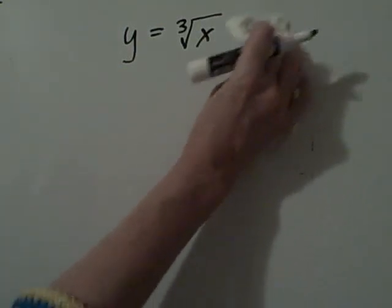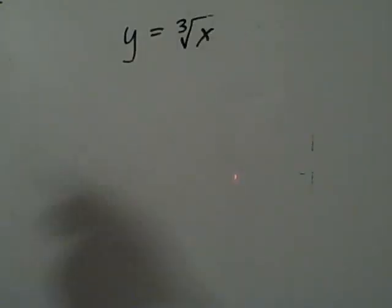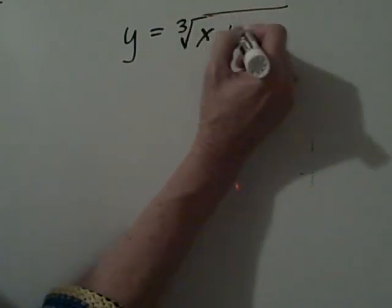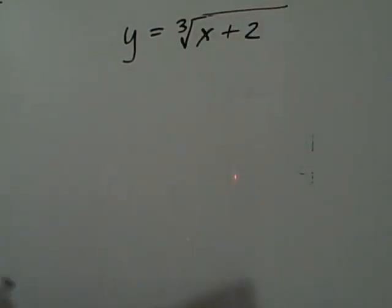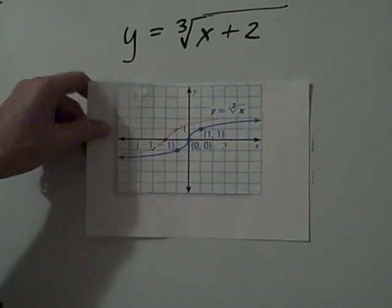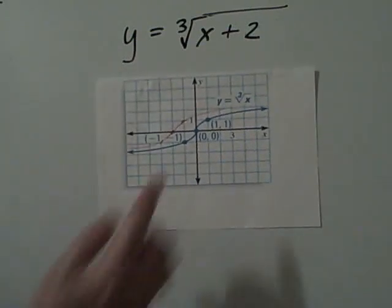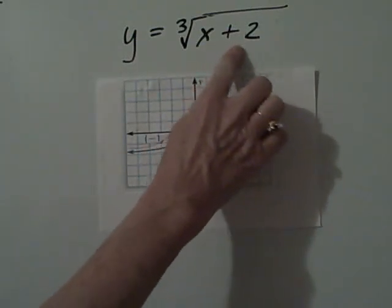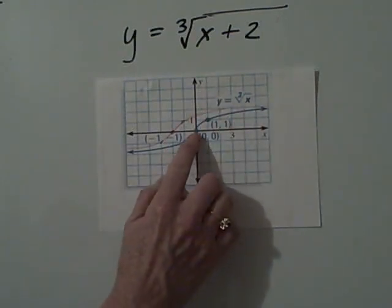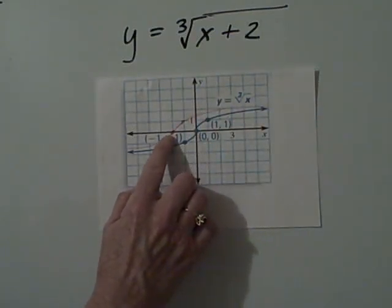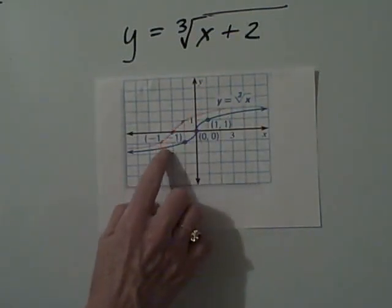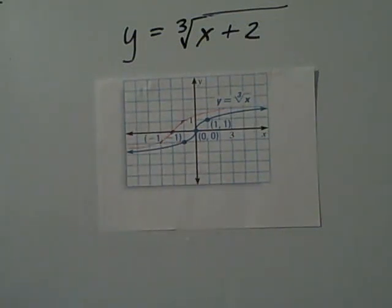What happens if the plus two is under the radical? Yep, you're right. It's going to shift two spaces. But this time it's going to shift two spaces, remember we do the opposite when it's under the radical, so we shift in two spaces to the left. So every point would shift two spaces to the left.